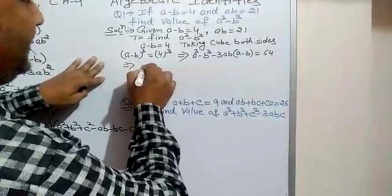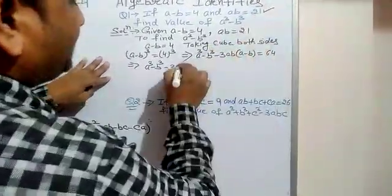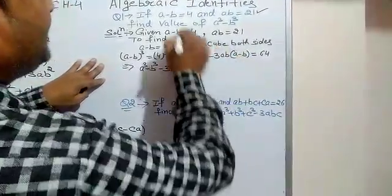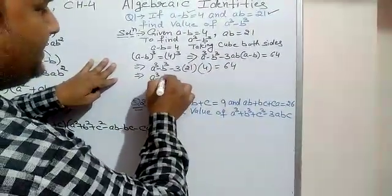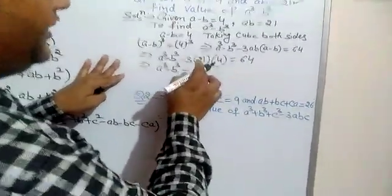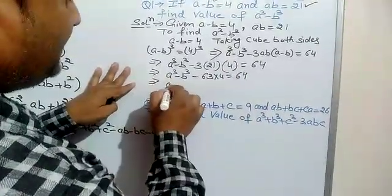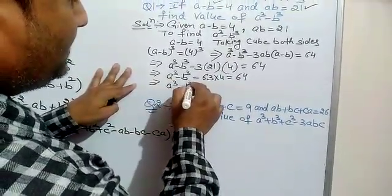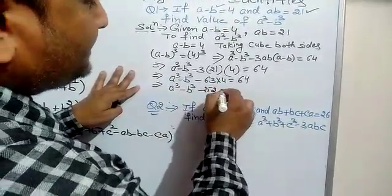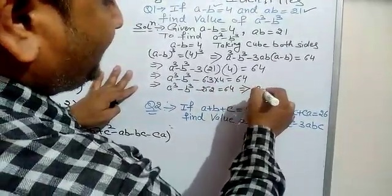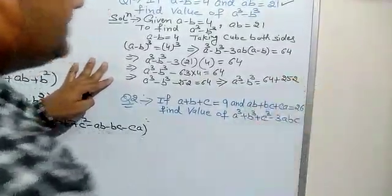So, a cube minus b cube minus 3ab. We have the value of ab that is 21, so substituting, and a minus b is given as 4, so putting 4 here, equals 64. It further implies a cube minus b cube minus 3 into 21 into 4 equals 64. That is a cube minus b cube minus 252 equals 64.